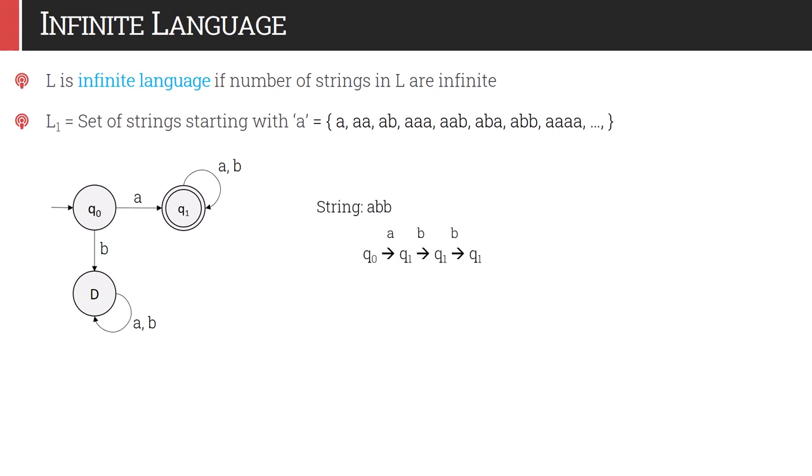Consider the string 'abb' and let us simulate it. Initially we are in q0. When we read 'a' we go to q1. Then we read 'b' and remain in q1. Then we read another 'b' and remain in q1. Our string is over. When the string is over and we are in a final state, we say the string is accepted. After reading 'abb' we are in q1, which is a final state, and hence 'abb' is part of language L1.